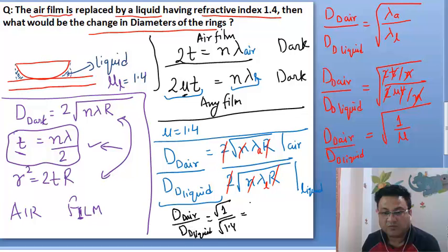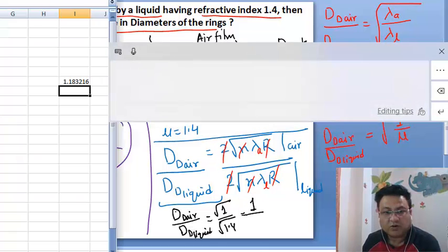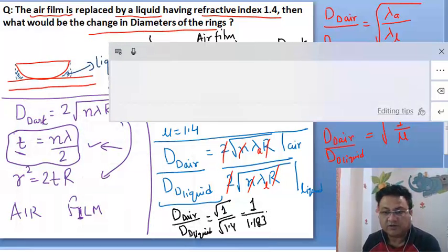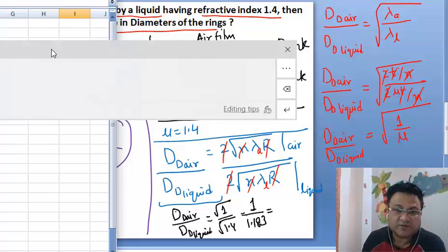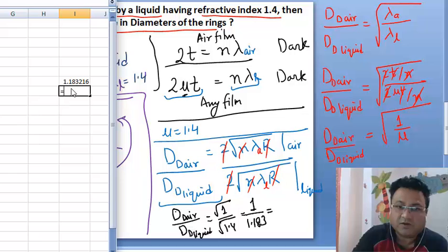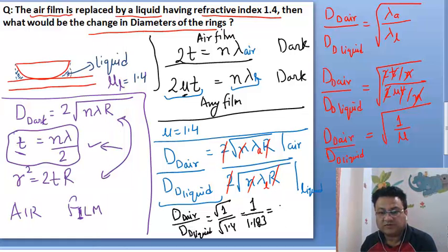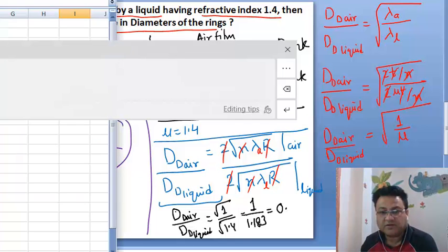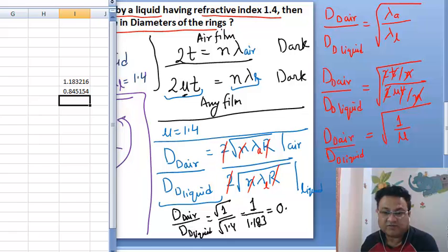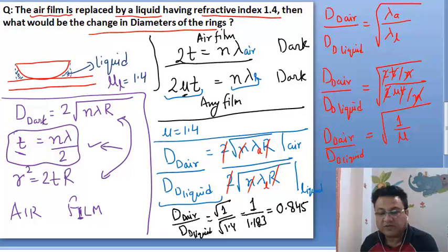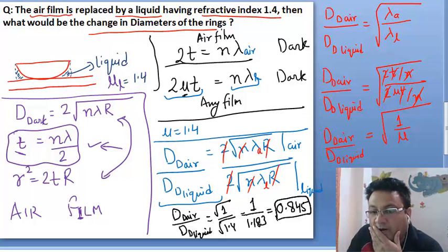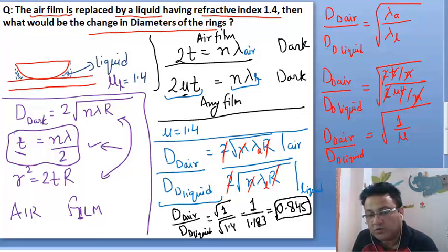This comes out to be 1 upon 1.183 and its inverse would be 0.845. So the diameter decreases by a factor of 0.845 when we immerse the setup in liquid.